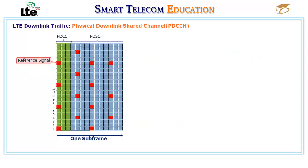The PDCCH carries control information from eNodeB to UEs using the control channel element (CCE), which contains uplink and downlink assignment, and uplink power control commands, or other information. The content of a CCE may be common to all UEs or may be specific to a particular UE.